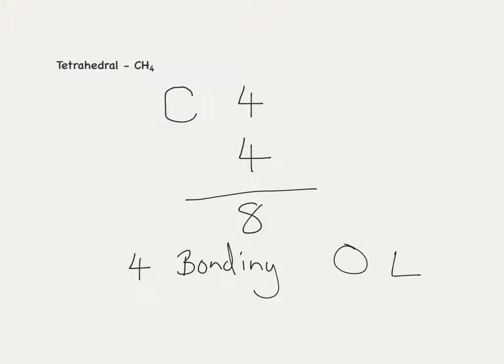Methane is our next example, which is tetrahedral as we will see. For the carbon, which is our central atom, we have four electrons in the outer shell. We have four hydrogen atoms forming covalent bonds, which gives us eight electrons in total. If we divide this value by two, we end up with four pairs of electrons, and all of those are bonding pairs with zero lone pairs.